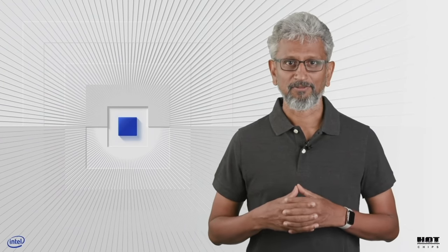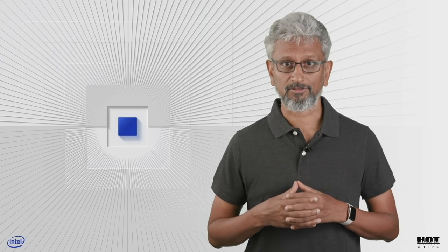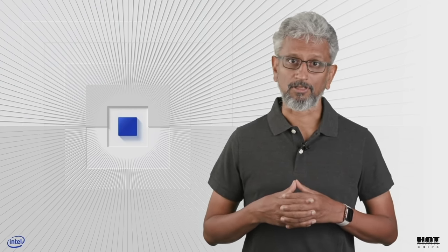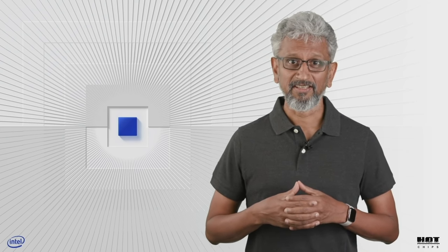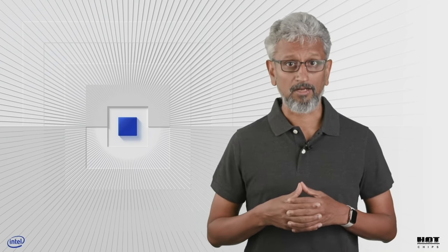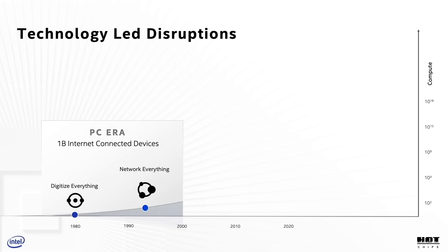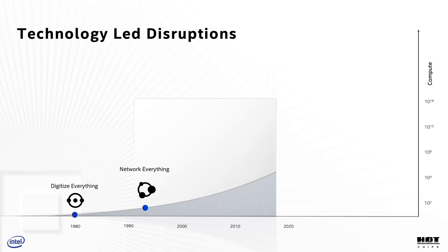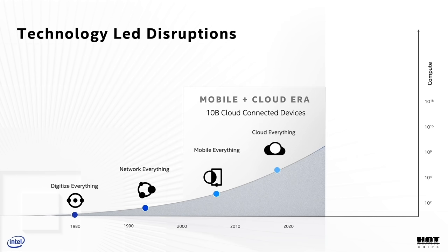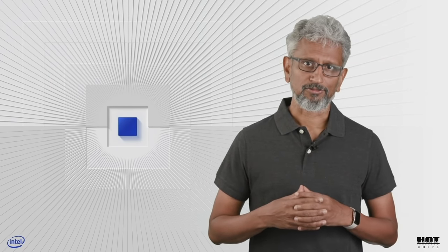In the last 40 years, we have seen amazing technology-led disruptions when we made a lot of performance available to a lot of people. In the PC era, we digitized everything we could and networked everything we could — in the end getting a billion people onto the internet, changing the way we learned, worked, and entertained ourselves. The next disruption was the mobile and cloud era, which connected 10 billion mobile devices to supercomputers in the cloud.